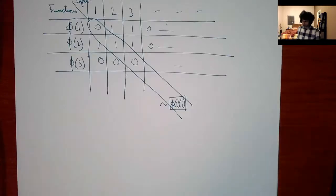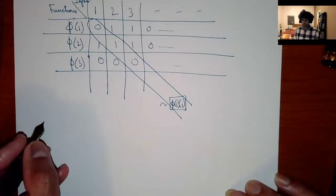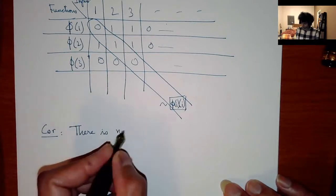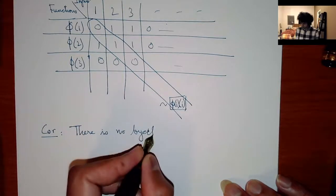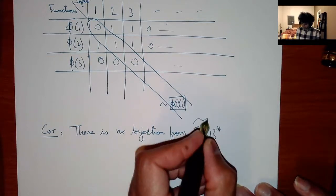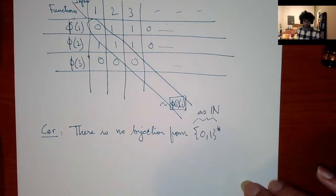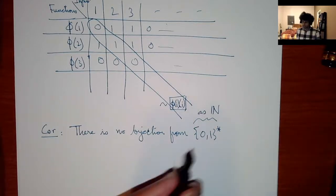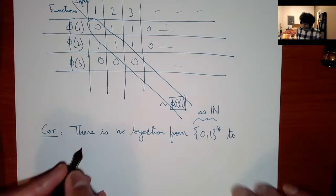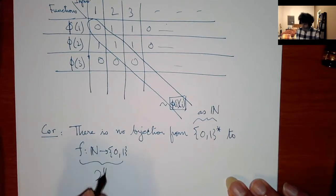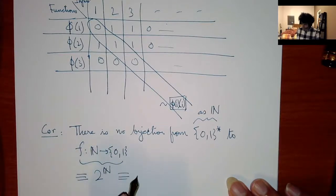A corollary of the corollary: there is no bijection from finite strings {0,1}* to infinite strings — that is, to functions mapping ℕ to {0,1}. Since ℕ and {0,1}* are equivalent (any finite string encodes a natural number), all these formulations are equivalent: no bijection from ℕ to 2^ℕ, and no bijection from finite strings to infinite strings.